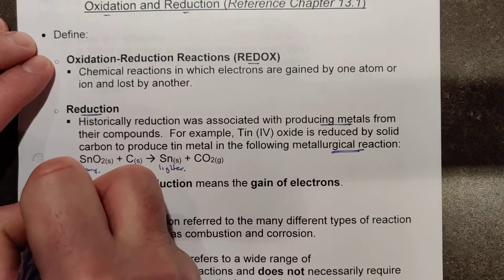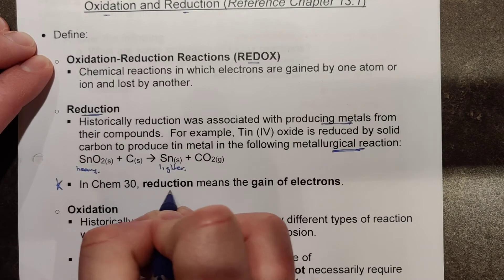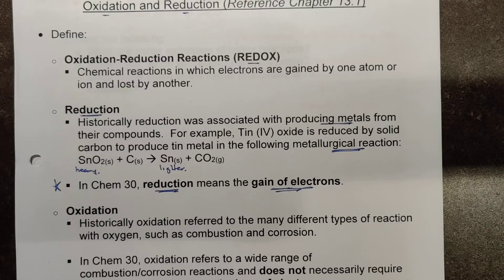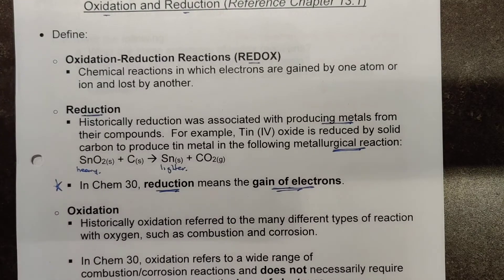In Chem 30, what we have to adjust to really quickly is that the process of reduction actually means to gain electrons, and we'll build upon that as we continue through chapters 13.1, 13.2, and 13.3. So we just have a little bit of a semantics problem — this was a historical process run this way for hundreds of years, and changing that perspective is a little difficult. The name stuck, even though we had to adjust and evolve our definition with respect to electrons. So we remember right away that reduction in Chem 30 is talking about the gain of electrons for a species — in other words, reducing its charge or becoming more negative.